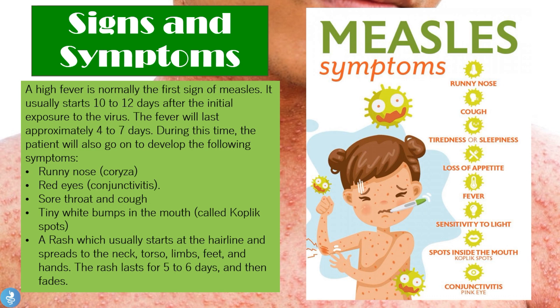Patients also develop tiny white bumps in the mouth called Koplik spots, which are very helpful in the actual diagnosis of measles. Additionally, patients develop a rash which usually starts at the hairline and then spreads to the neck, torso, limbs, feet, and hands. The rash lasts approximately five to six days and then fades away.